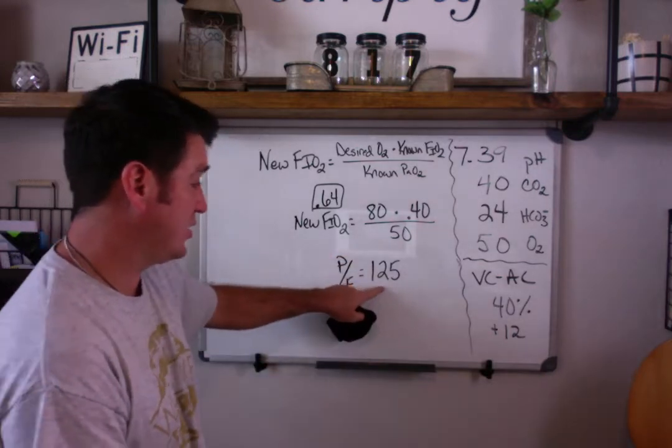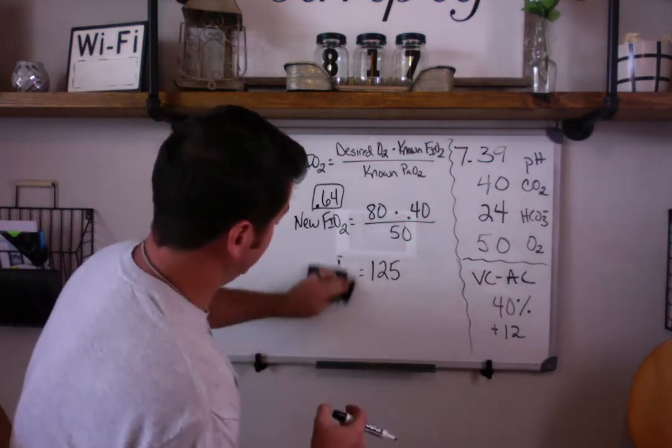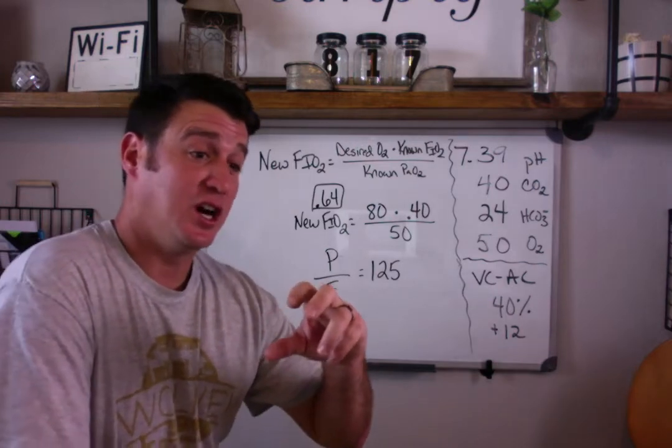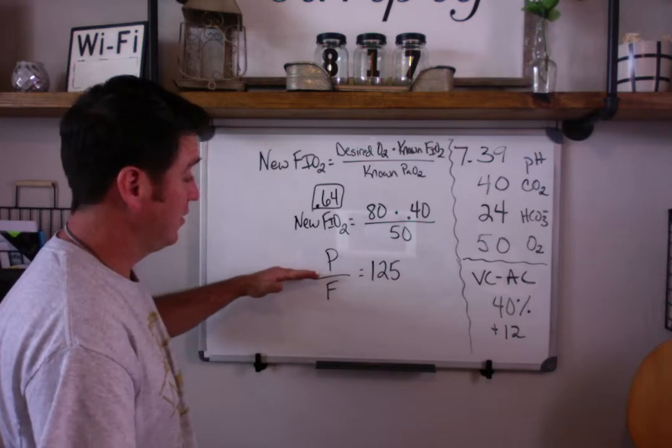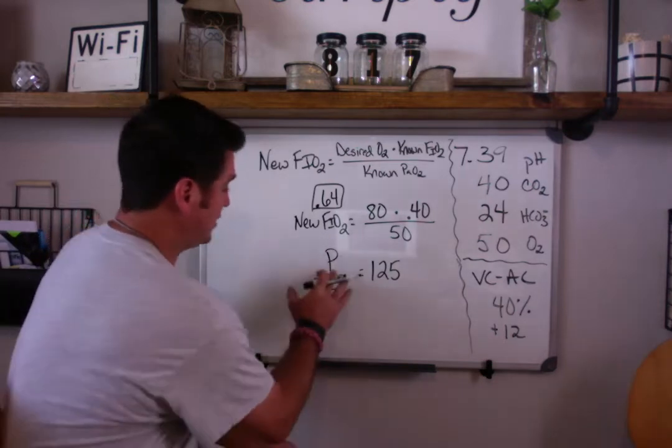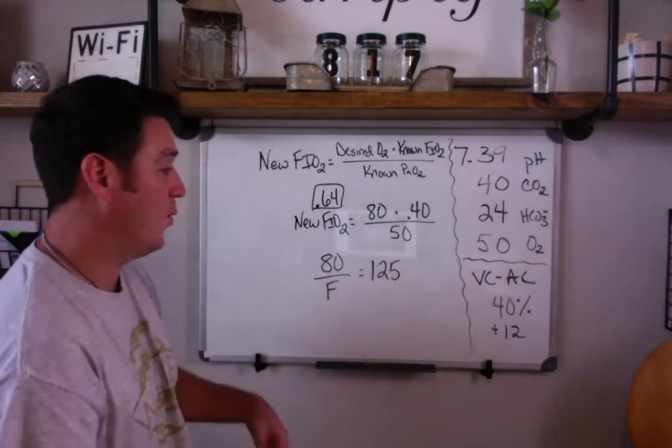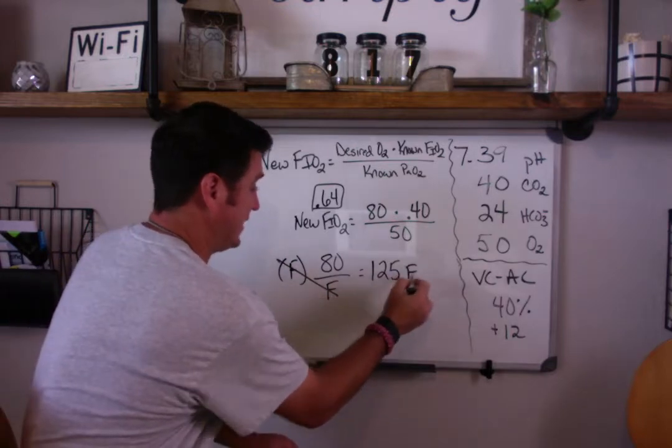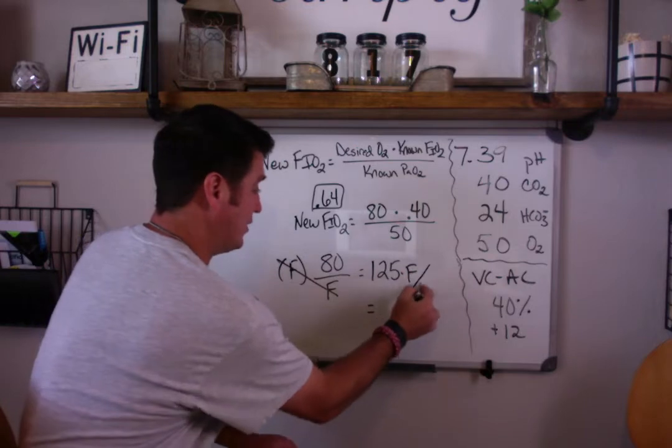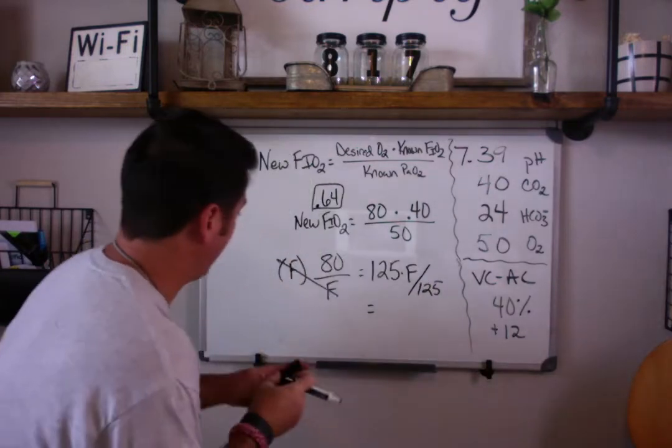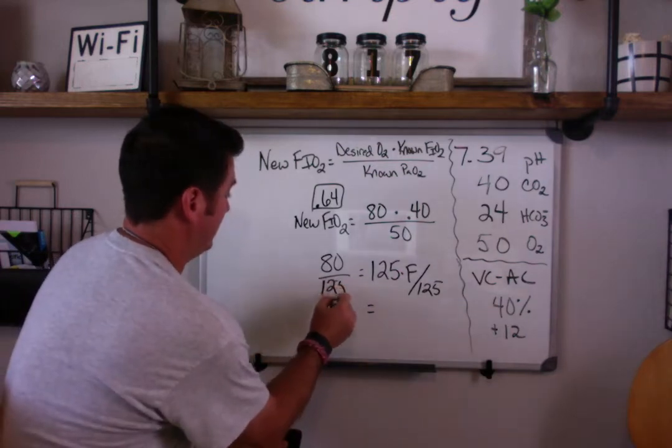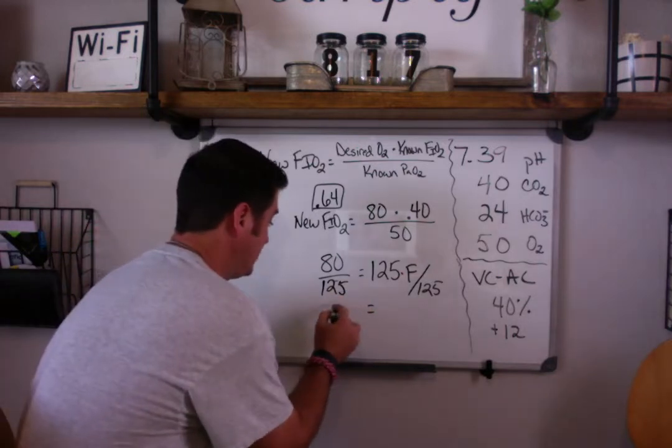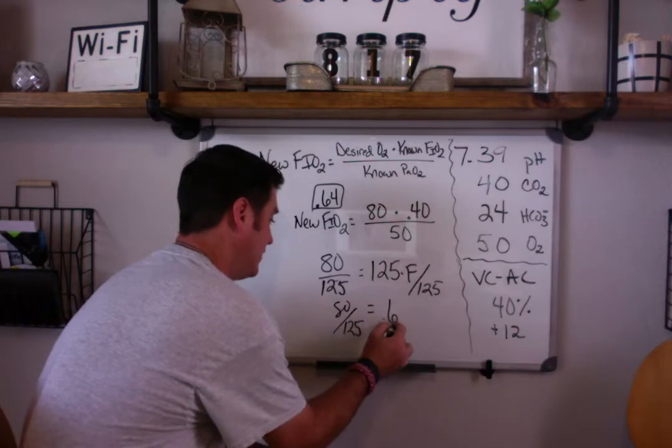Now if we know that our PF ratio is 125, then if we change nothing else, our PF ratio should approximately stay the same. So what if we just plugged in numbers here? What if we said, we want our PaO2 to go up to 80. What would I have to change my FiO2 to? Well, multiply both sides by F. That takes that out. Multiply this side, that makes this 125 times F. Now multiply 80 by 125... wait, 80 divided by 125 equals, you guessed it, 0.64.